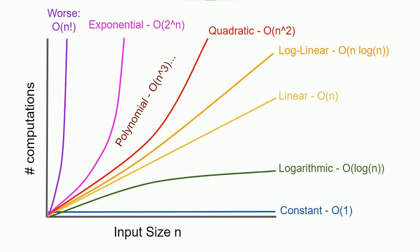Quick sort is another super fast algorithm with a really cool idea. You just pick a random element, and anything that should go before that element you shove to the left, anything that should go after you shove to the right, and then you recursively do that on each half. Despite the randomness of just picking a random element as your midpoint, it actually ends up being one of the fastest ways to sort things.